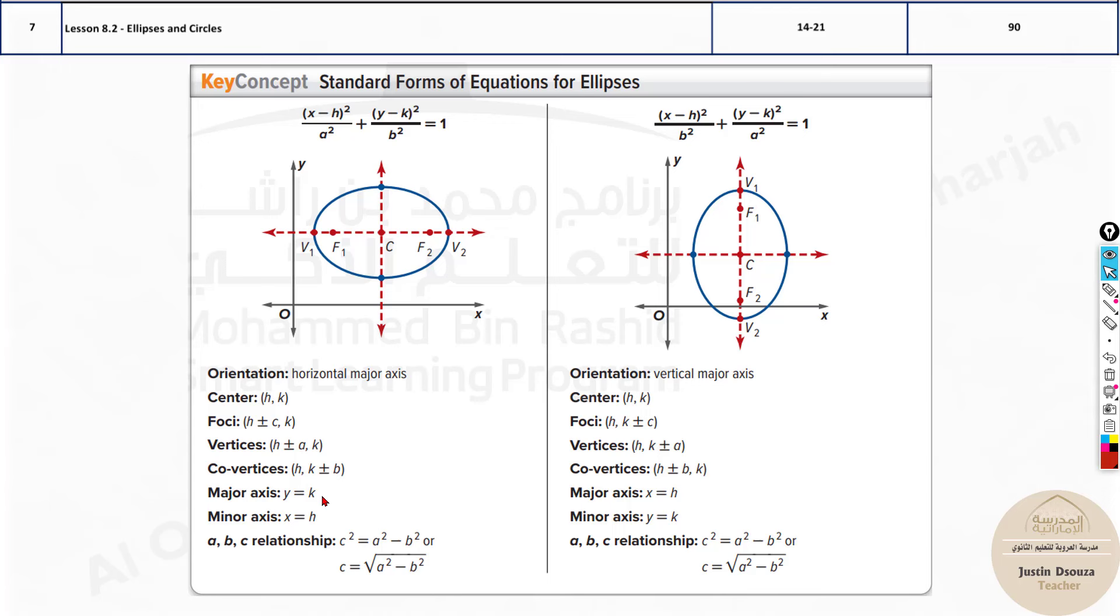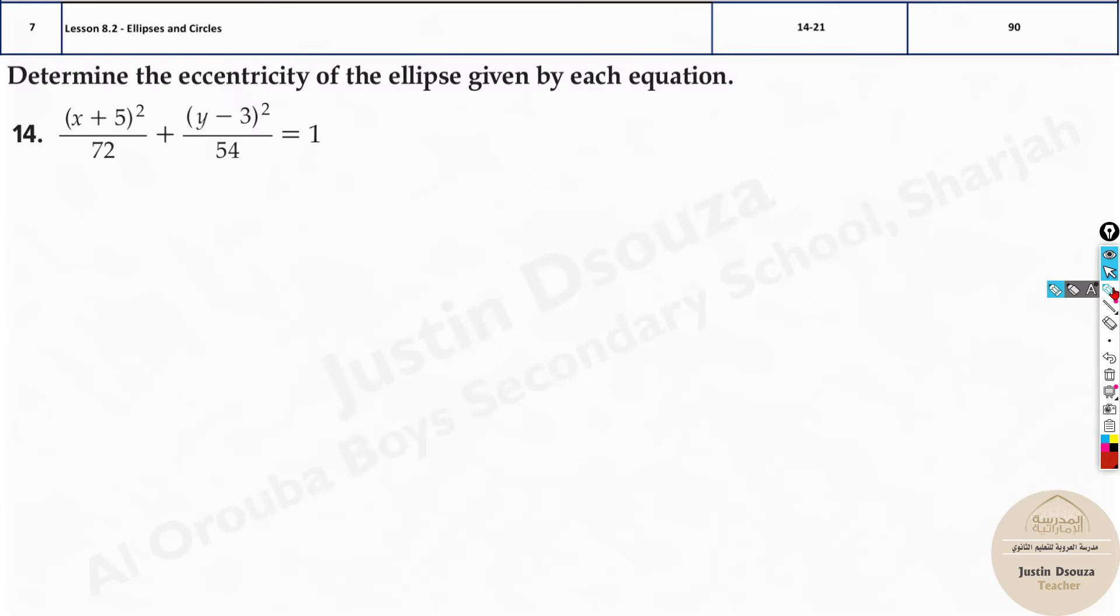This is the hypotenuse. So now if you take b to the other side it becomes c squared equals a squared minus b squared, and this is the formula for finding c. Now with this basic information we can easily solve all these problems.